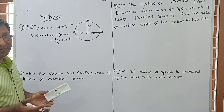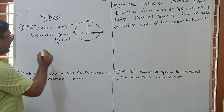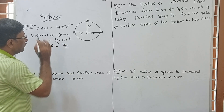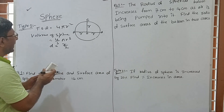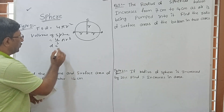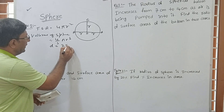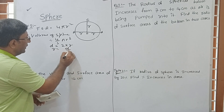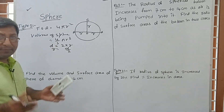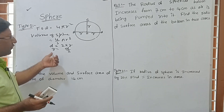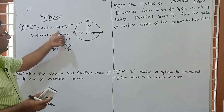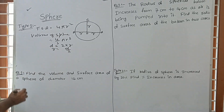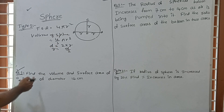When radius is given, we directly use this formula. When radius is not given and diameter is given, you know the formula: diameter equals 2r, that is twice the radius. So radius will be half of the diameter. If diameter is given, we first find radius, then move on to surface area or volume.